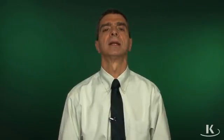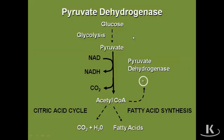Coming back to glucose metabolism, remember glucose enters every cell in your body, and when glucose enters it goes through this very important pathway called glycolysis. The location of glycolysis in every cell in your body is the cytoplasm. The end product of glycolysis is pyruvate, and that's where we finished up in the early part of this particular chapter.